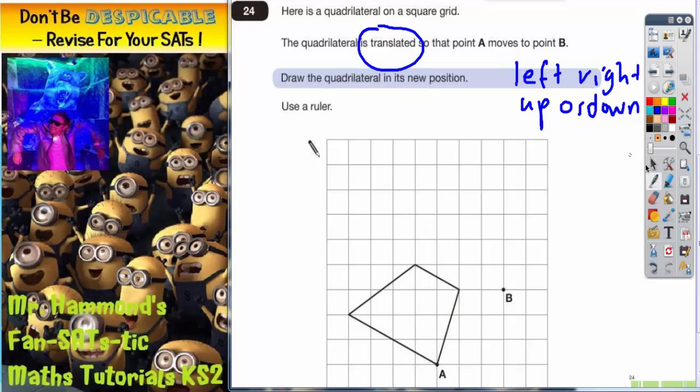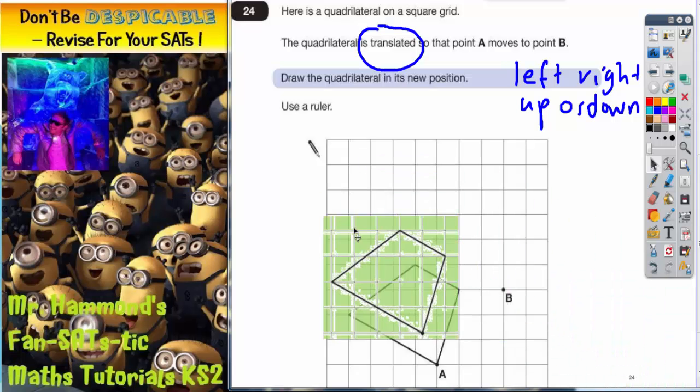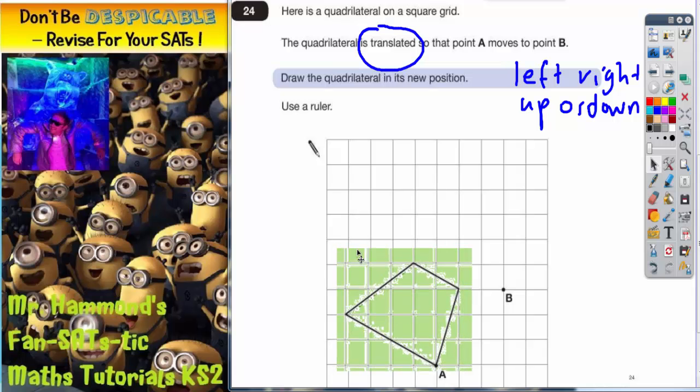Now, there are actually two ways you can do this. Way number one is to use tracing paper. So here's a shape that I traced earlier on some tracing paper. As you can see, it fits exactly over. Now, all we've got to do is slide the shape or translate the shape so that point A moves to point B. So once you've traced your shape,